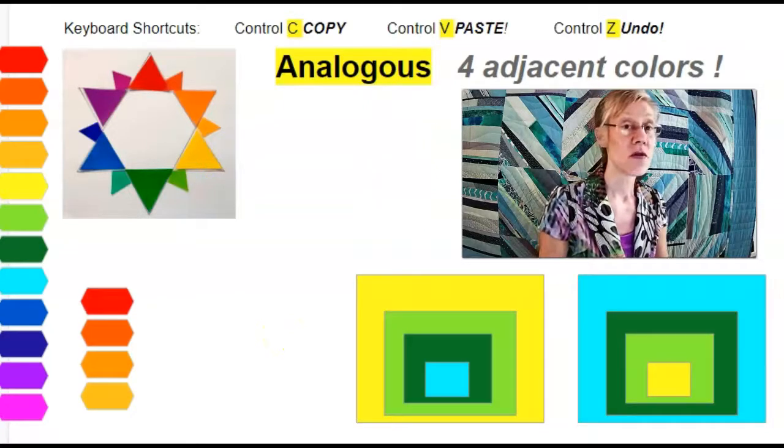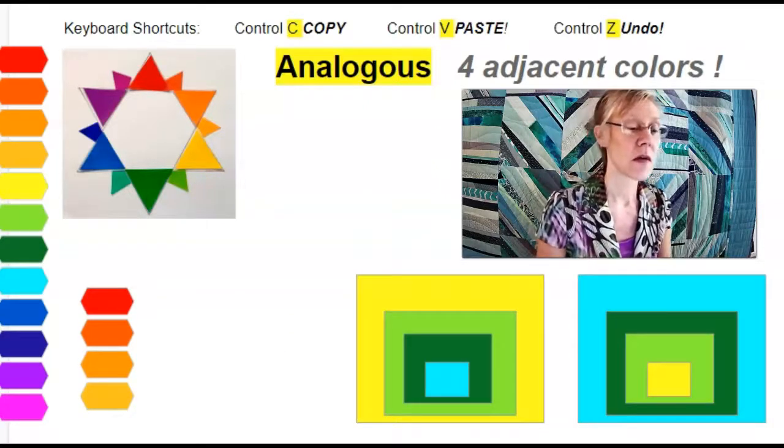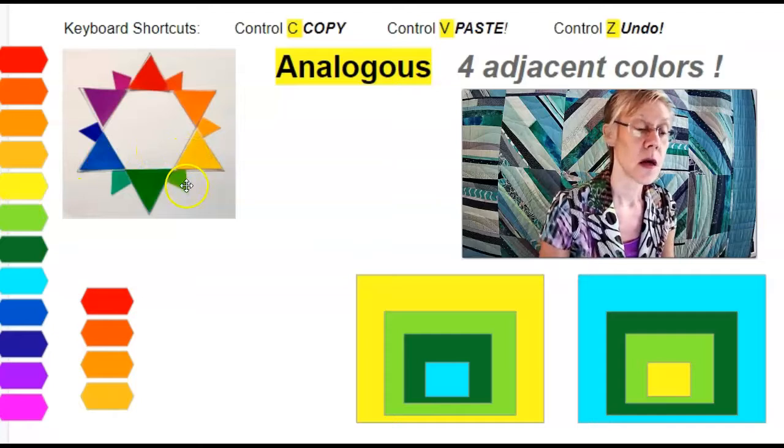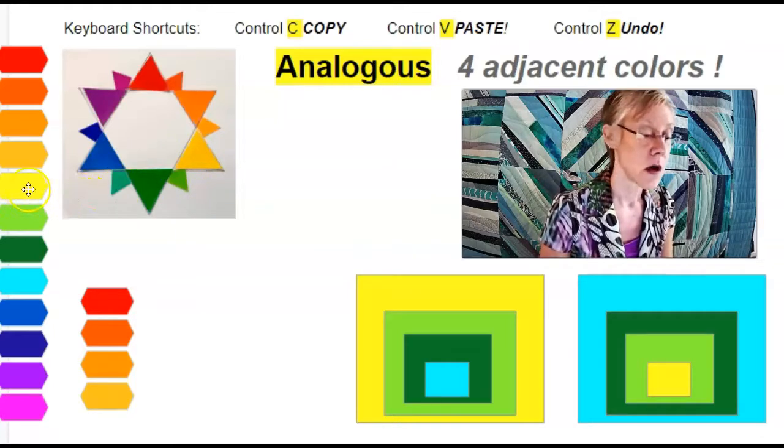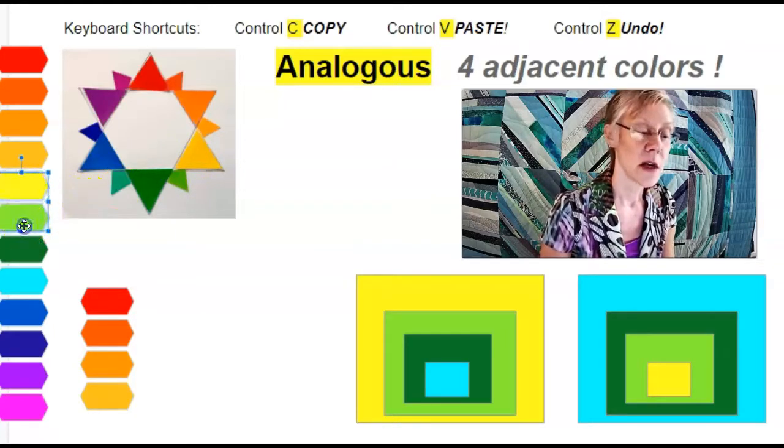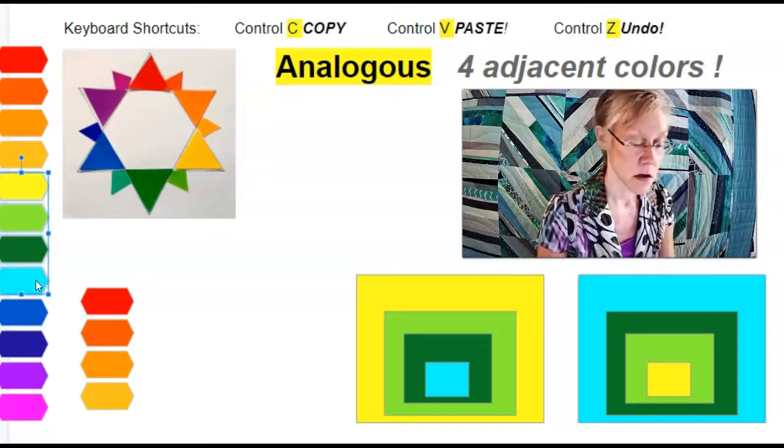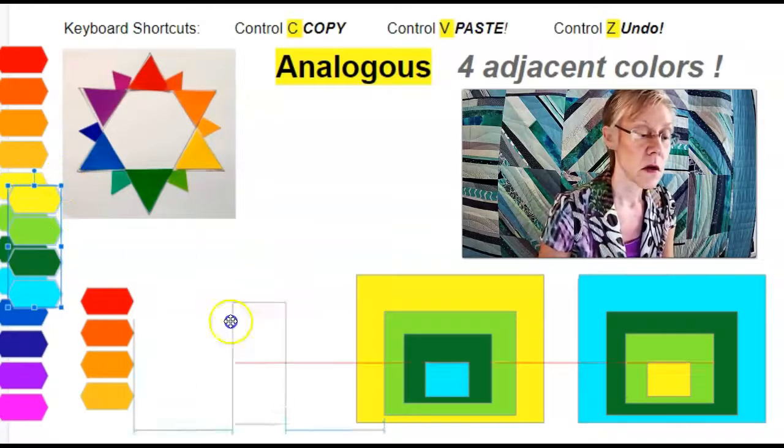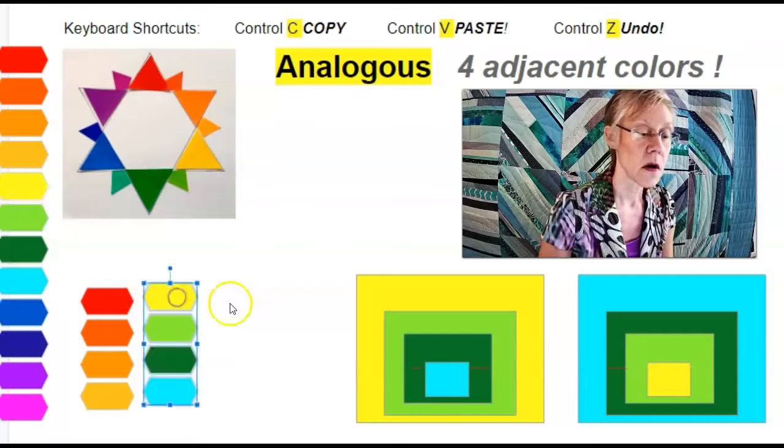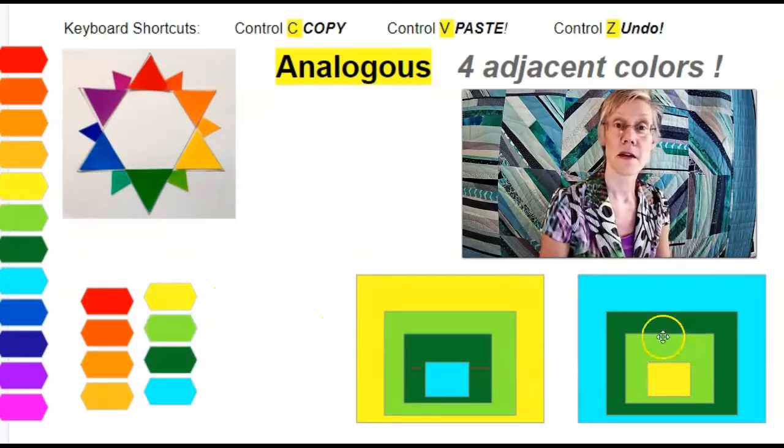I'm going to show you a few more examples. Yellow, lime, green, and aqua. Primary, tertiary, secondary, tertiary. Those four are also analogous.